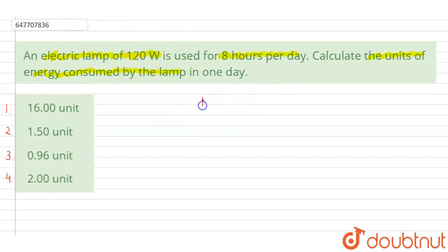It means we have power. Power is 120 Watt. Similarly, time is 8 hours per day. So, I am considering 8 hours.